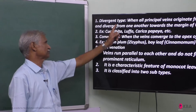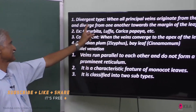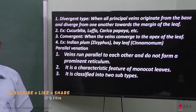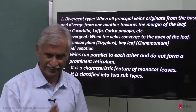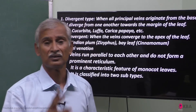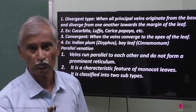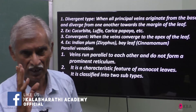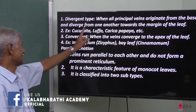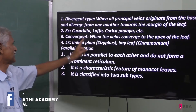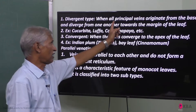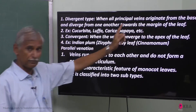There are two types: one is divergent and one is convergent. In the divergent type, the main vein is more than one or two. Divergent is when all principal veins originate from the base.